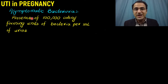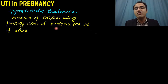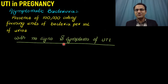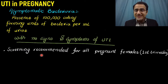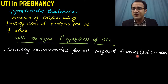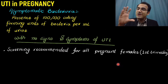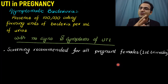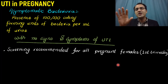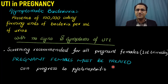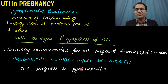Asymptomatic bacteriuria is defined as the presence of 100,000 colony forming units of bacteria per mL of urine with no signs and symptoms of UTI. Screening is recommended for all pregnant females in the first trimester because this asymptomatic bacteriuria can progress to a full-blown UTI which can lead to complications. It must be treated before it converts into symptomatic UTI or progresses to pyelonephritis.